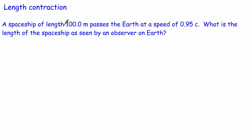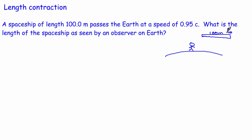Let's go back to the spaceship example. We've got a ship of length 100 metres and it passes by the Earth at a speed of 0.95 times the speed of light. The people on the ship measure it as 100 metres — that's the L₀. For the people that aren't on it, the ship is moving at 0.95C relative to them. Taking our equation, L equals L₀ times the square root of (1 minus V squared over C squared).